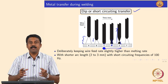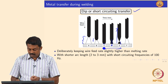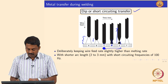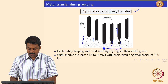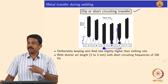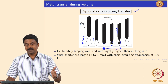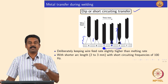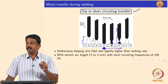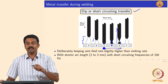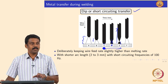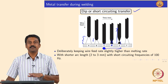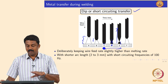During this process, by carefully manipulating the current-voltage waveform, we can transfer the droplet without any explosion. That is very critical because if you keep on passing the same amount of current when you form a neck, you increase the Lorentz force and you will have an explosion. Your power source should be capable of turning the current off the moment short circuiting happens. By deliberately keeping the wire feed rate slightly higher than the melting rate, we can establish short circuiting. I will show you a video — it will be very clear.